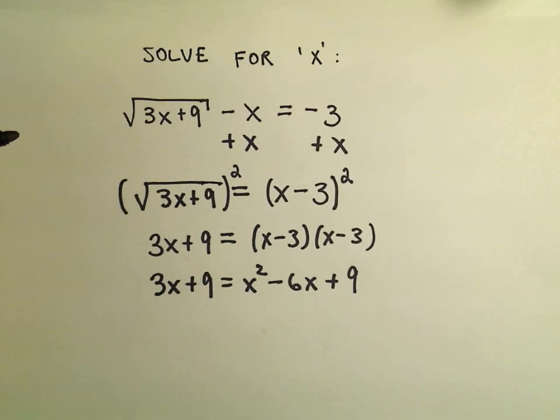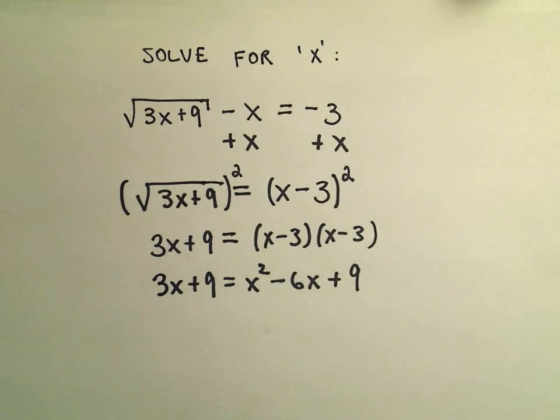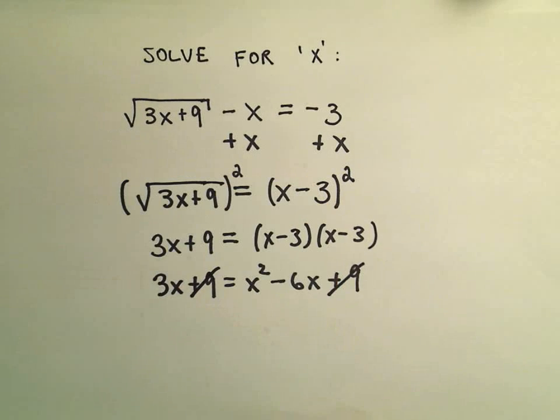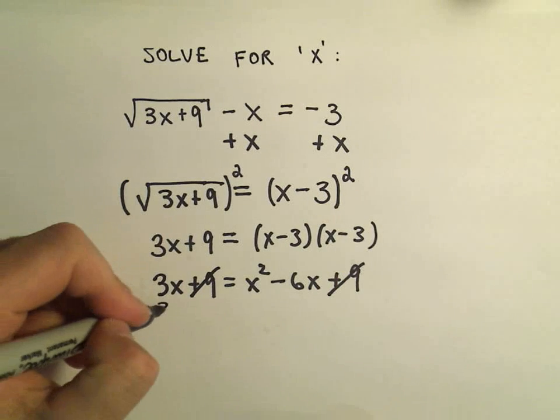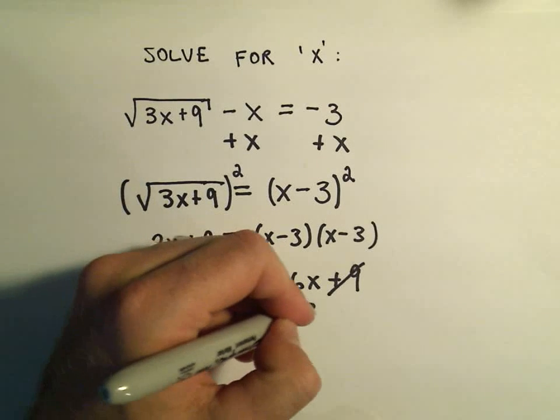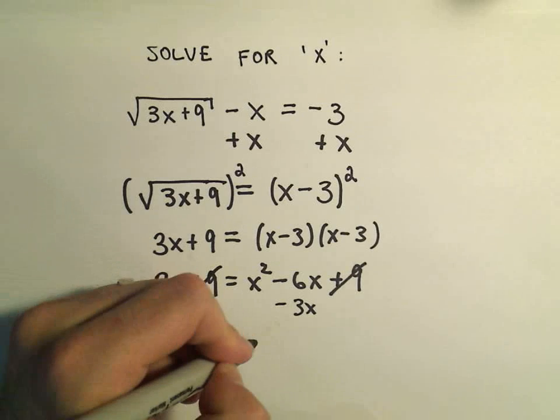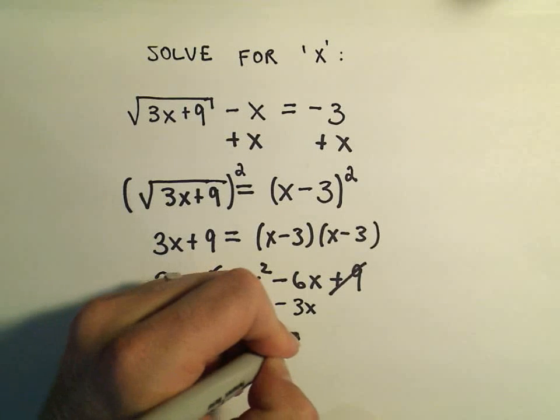So now again I've got a more familiar quadratic equation. Notice we could simply subtract 9 from both sides and that would get rid of the 9's. The other thing I'm going to do is I'm going to subtract 3x from both sides. So that would leave me with 0 on the left and then I would have x squared minus 9x.